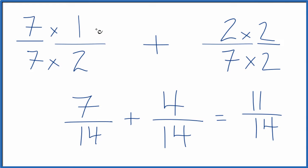So in answer to our question, when we add one-half plus two-sevenths, we end up with 11-fourteenths. This is Dr. B. Thanks for watching.